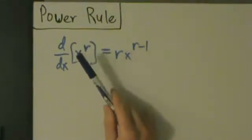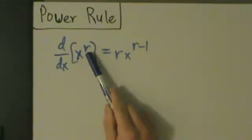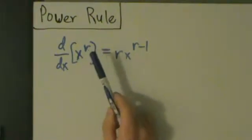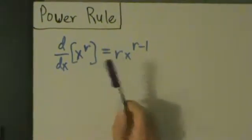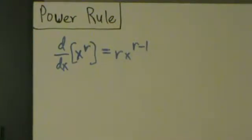But the more general version is we could say x to the r, where r is actually any real number. It could be positive, it could be negative, it could even be zero. And this still works here.